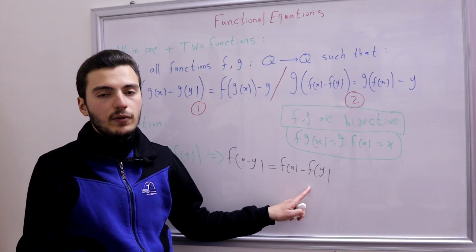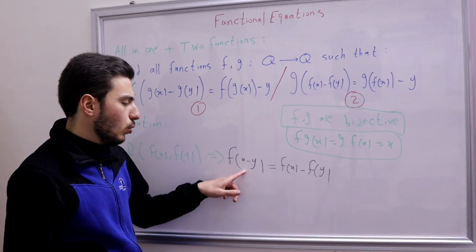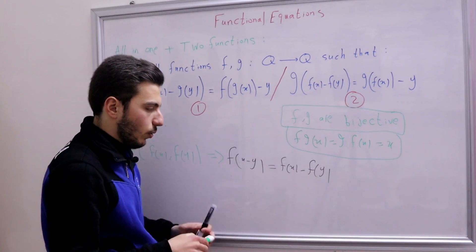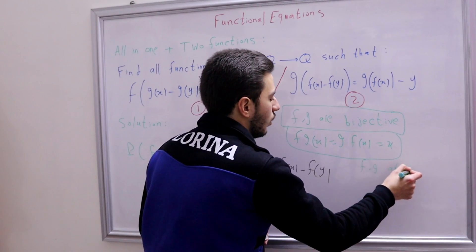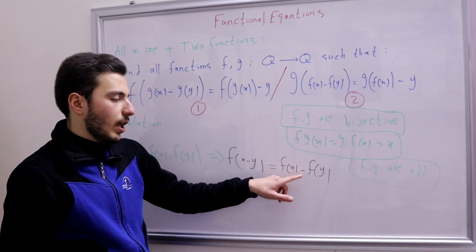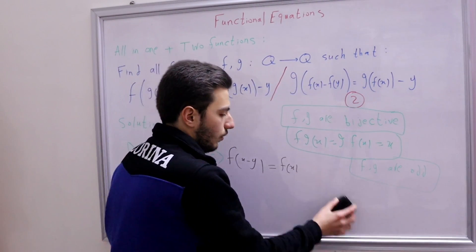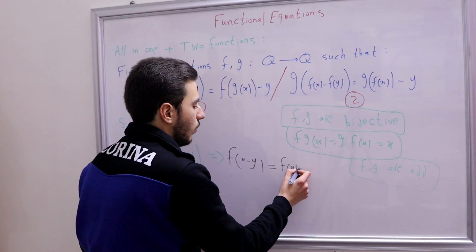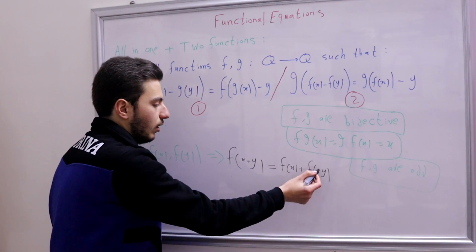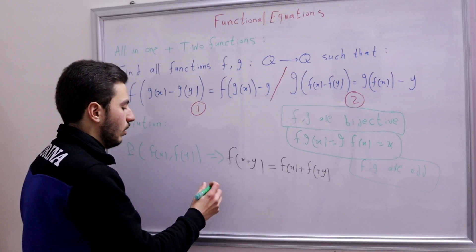To apply the standard Cauchy solution we need f(x + y) = f(x) + f(y). First, f is odd: substituting x = 0 gives f(−y) = −f(y). So f(x − y) = f(x) + f(−y). Now substituting y with −y turns this into f(x + y) = f(x) + f(y) — the additive Cauchy equation! By symmetry, f and g are both odd functions.